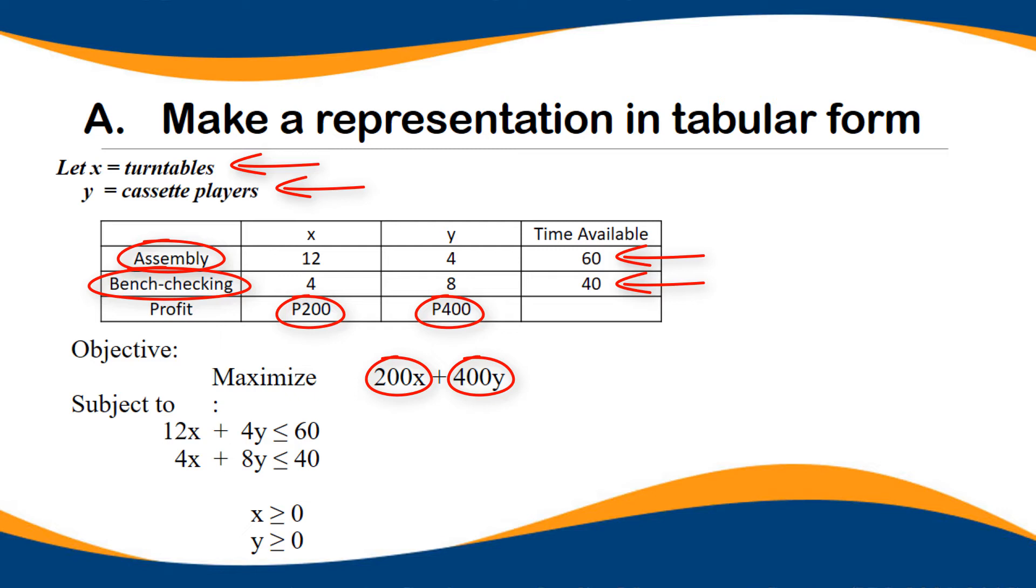So the objective is to maximize. Because profit is being discussed. Maximize the profit. The profit is 200 times X plus 400 times Y, where X is turntables and Y is cassette players. Subject to the limitations: for assembly time, we have 12X plus 4Y less than or equal to 60. Then for bench checking, 4X plus 8Y is less than or equal to 40 hours of bench checking time.